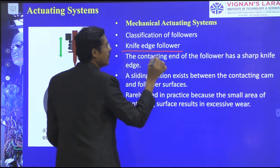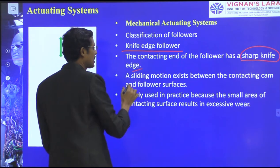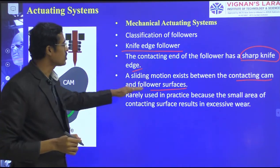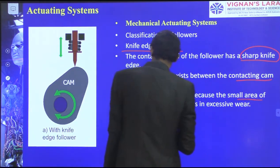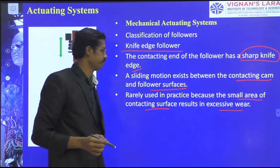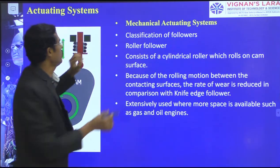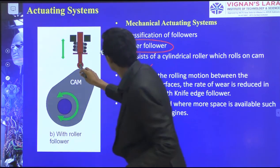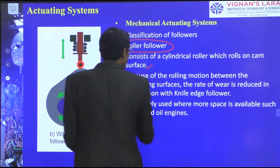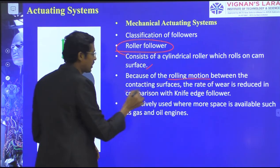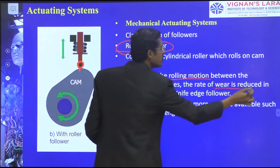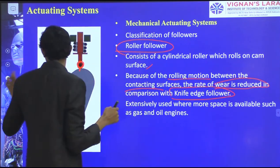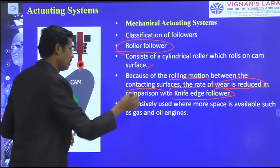Knife edge follower: the contacting end has a sharp knife edge. Sliding motion exists between the contacting CAM and follower surfaces. It is rarely used in practice because the small area of contacting surface results in excessive wear. Roller follower: it consists of a cylindrical roller which rolls on the CAM surface. Because of the rolling motion between the contacting surfaces, the rate of wear is reduced compared to the knife edge follower. It is extensively used where more space is available, such as in gas and oil engines.